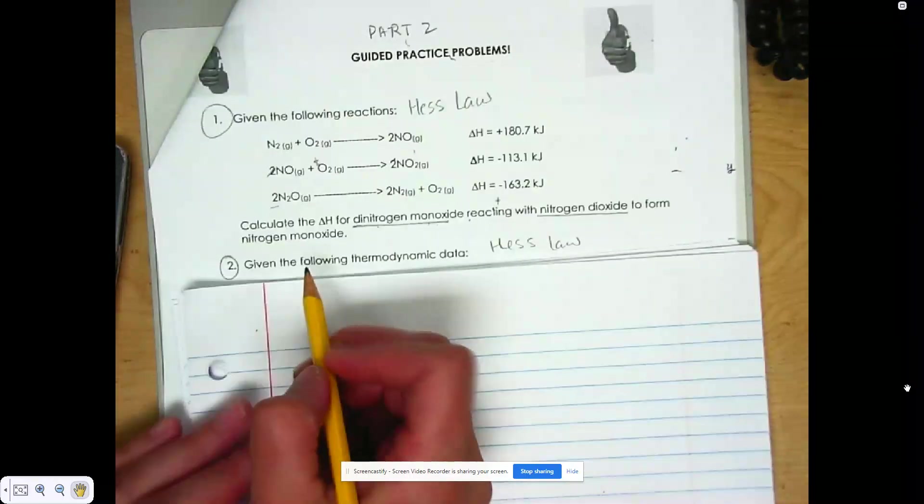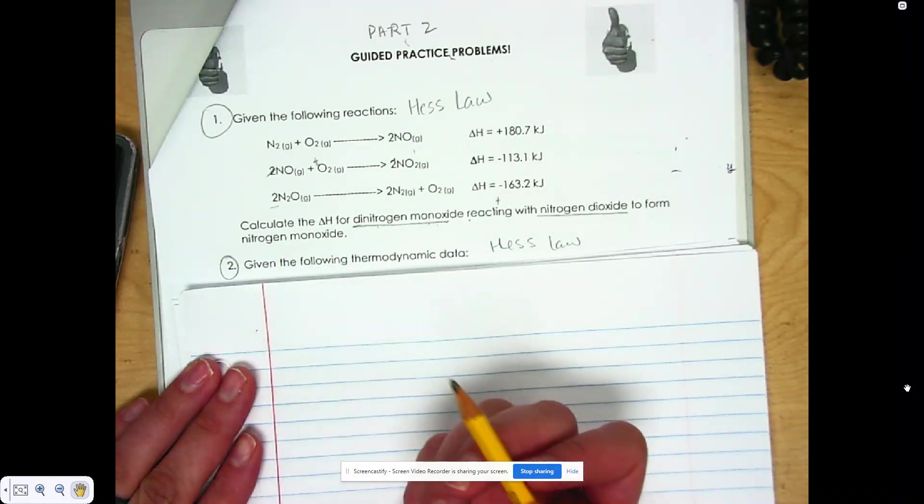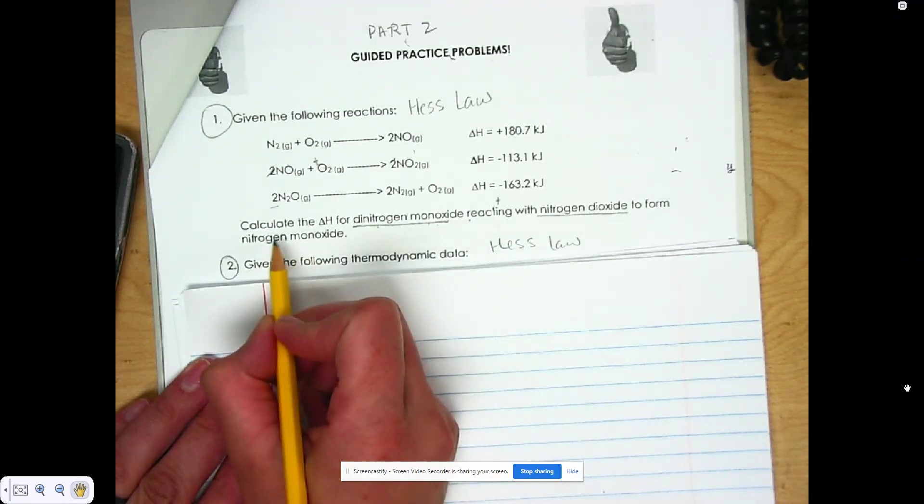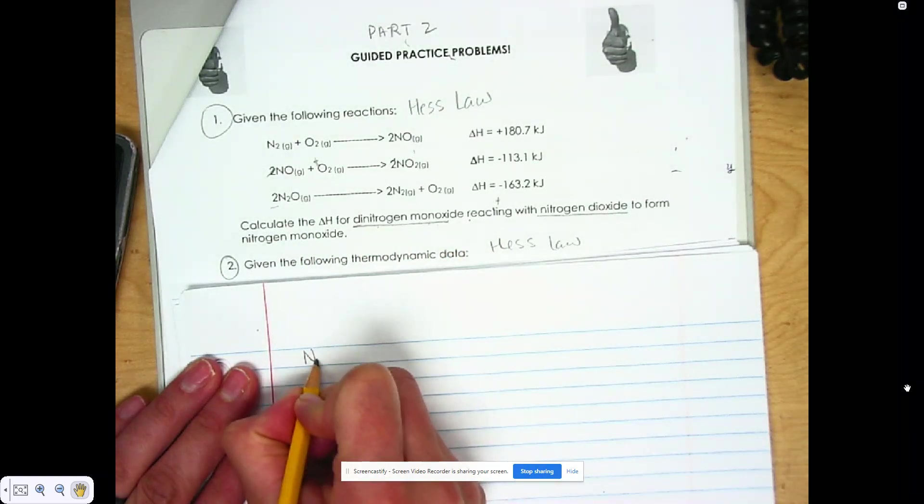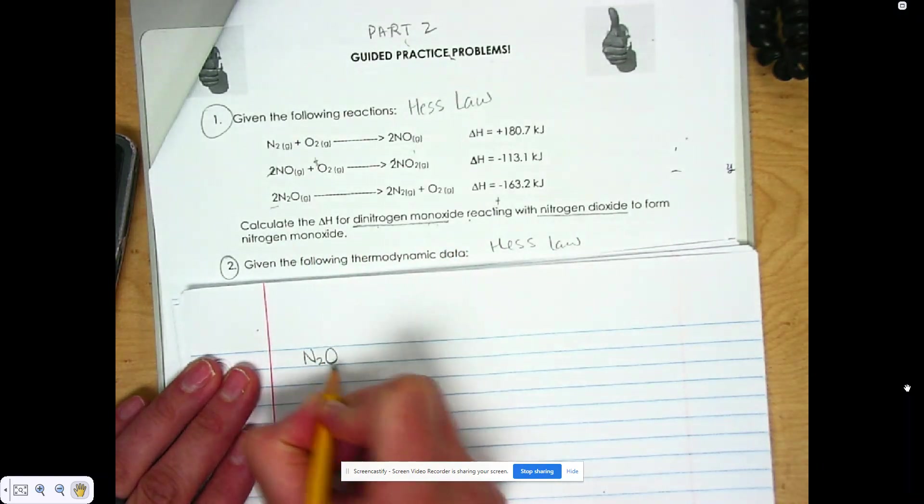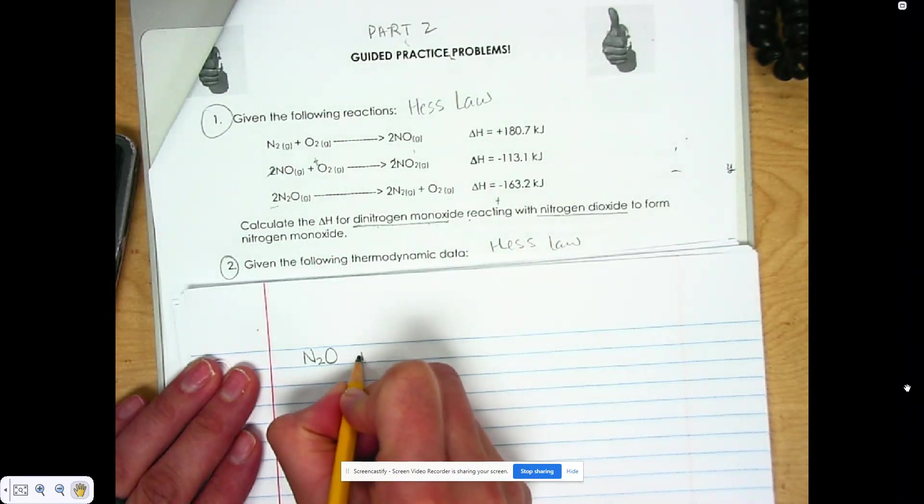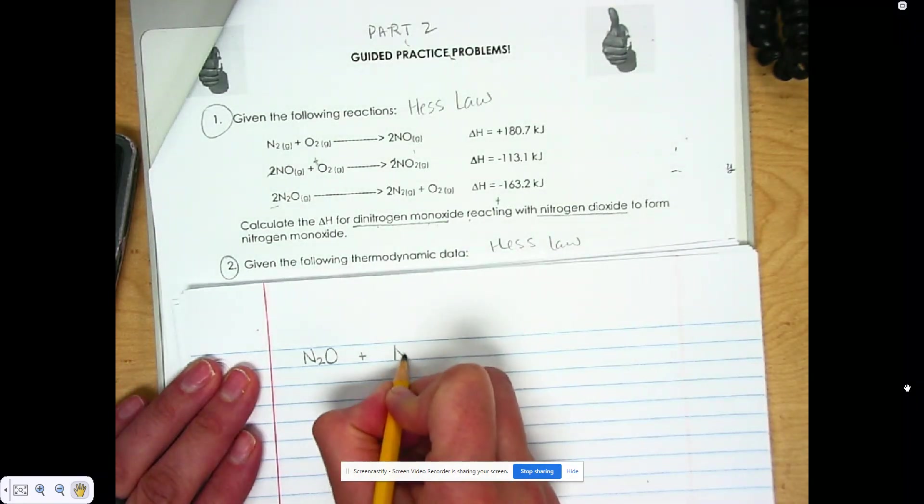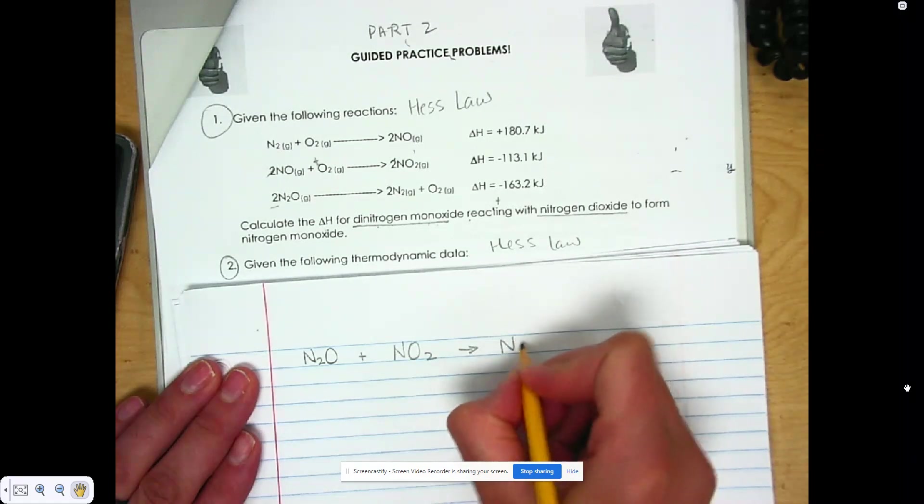The first thing we want to do here is when we read the problem, we notice that we have to create a balanced chemical equation. We want to calculate the enthalpy for dinitrogen monoxide. So dinitrogen means two nitrogens and one oxygen reacting with nitrogen dioxide to form nitrogen monoxide.